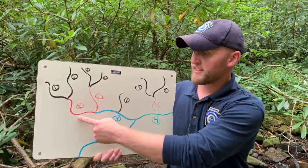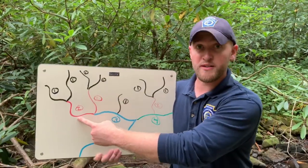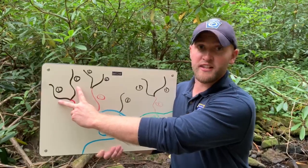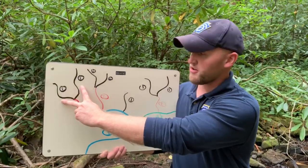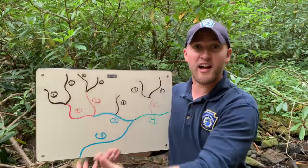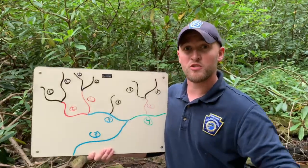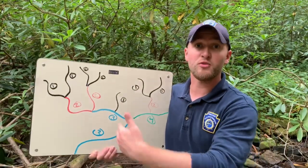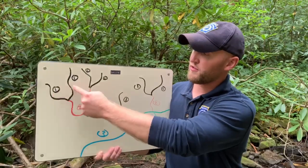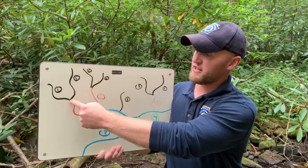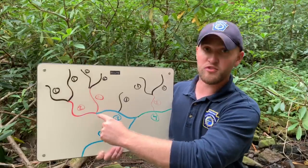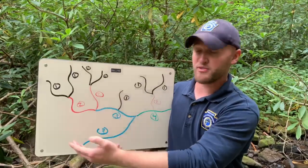In order to form that second order stream, two first order streams — which I have represented with the black marker — have to come together, or confluence. A confluence is where one stream flows into another and two streams meet. So right here we have two first order streams meeting to form that second order stream, which we have represented in red.